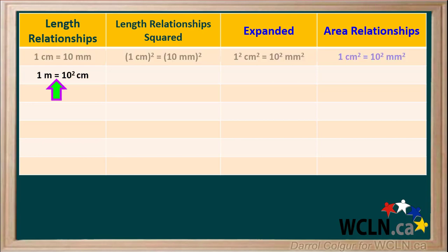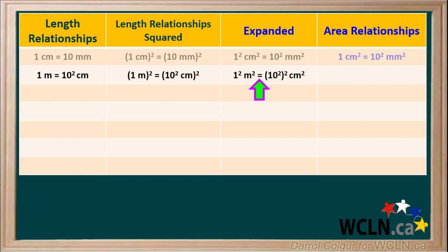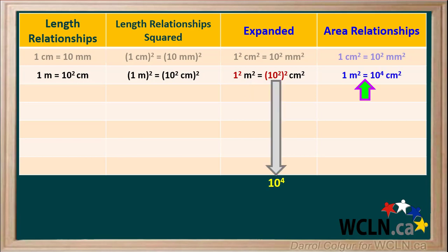Let's try another relationship for length and use it to create a relationship for areas. We know that one meter is equal to one hundred, or ten squared, centimeters. Now we'll square both sides of this equation to give us one meter all squared is equal to ten squared centimeters all squared. Expanding it gives us one squared meters squared equals ten squared, squared, centimeters squared. One squared is one, and ten squared squared is ten to the power of four.